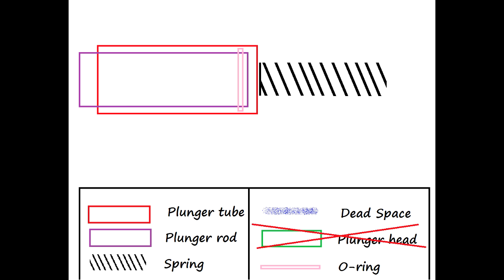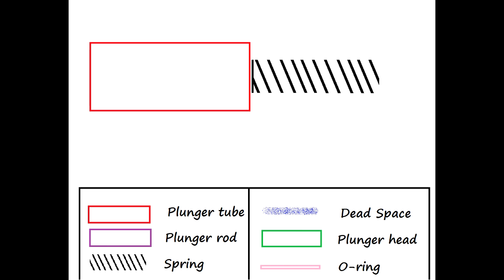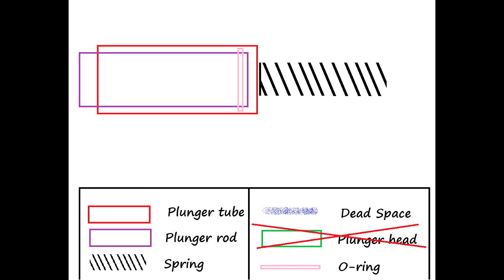This system, like the direct plunger tube system, also uses a plunger tube and spring, but the plunger rod and head are sort of combined into a single piece which also supports the o-ring.